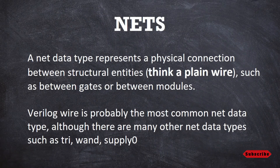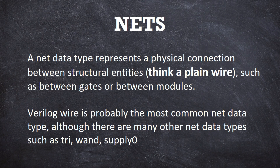For nets, the data type represents a generally physical connection. If there is a physical connection, there are gates or two modules. It is very simple to think about a plain wire — a plain wire connected to two gates. That is the net data type. There are many net data types like tri, wand, supply, etc.